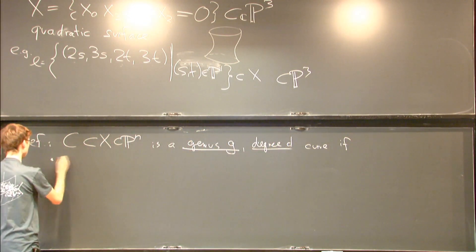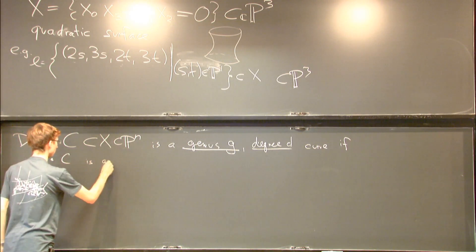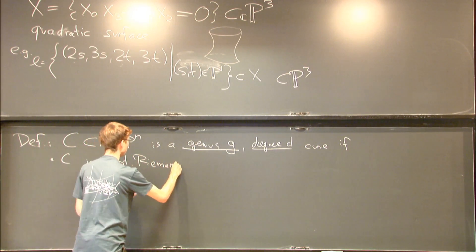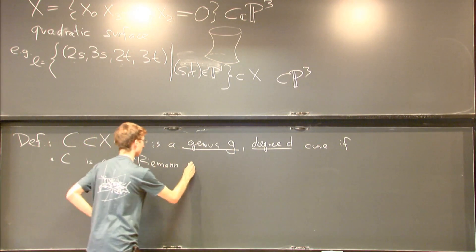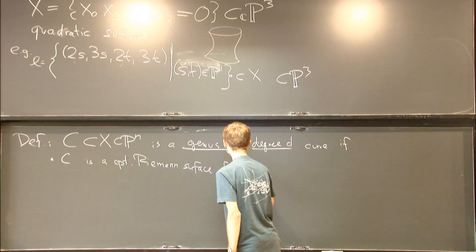Genus g means that C is always going to be a compact Riemann surface, or an algebraic - which is the same thing as an algebraic curve, smooth algebraic curve, of genus g.